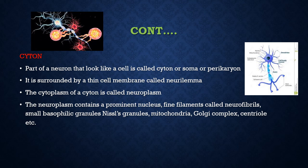Inner to the Neuroplasm, it contains a prominent nucleus, small basophilic granules, mitochondria, Golgi complex, and so on. It also contains fine filament-like structures called Neurofibrils.